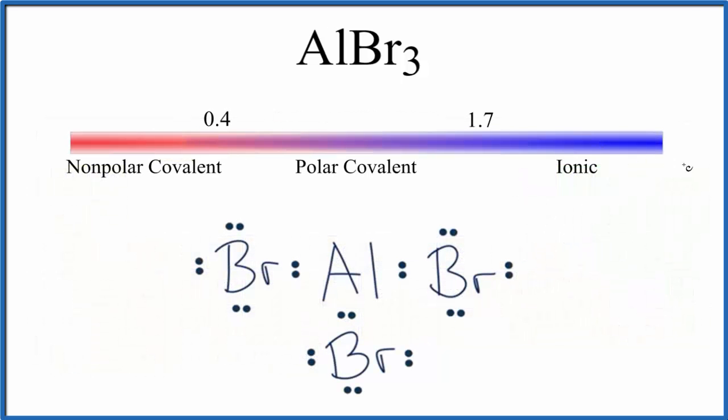A difference of 1.3 on the scale puts it about right here. That means aluminum bromide would be polar covalent. We're only talking about the bond here, not the whole molecule. Each of these bonds is going to be polar covalent.